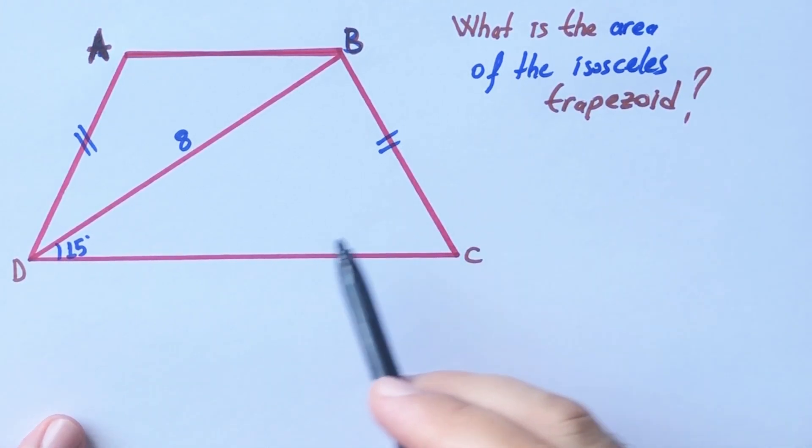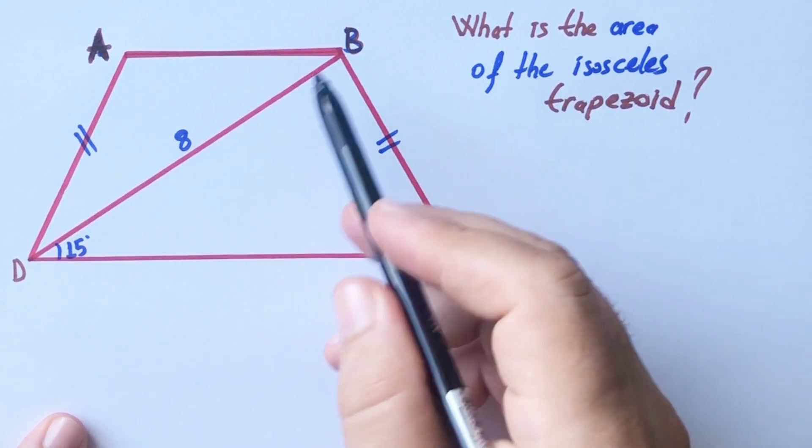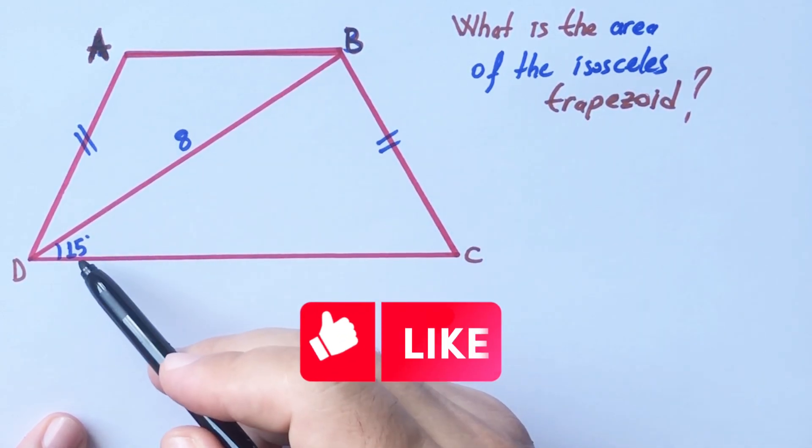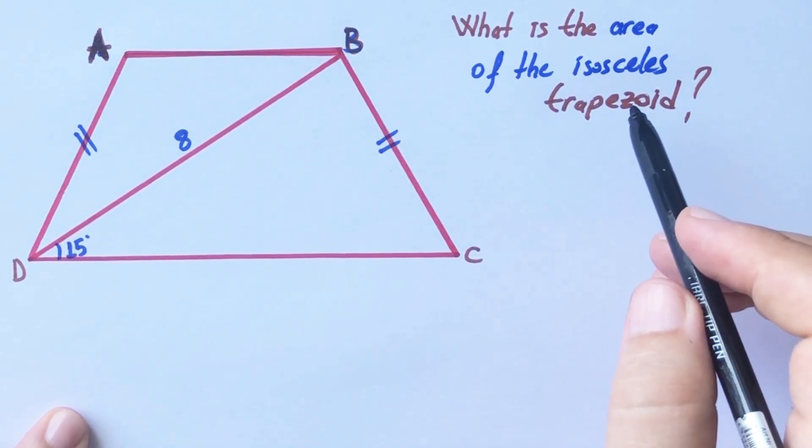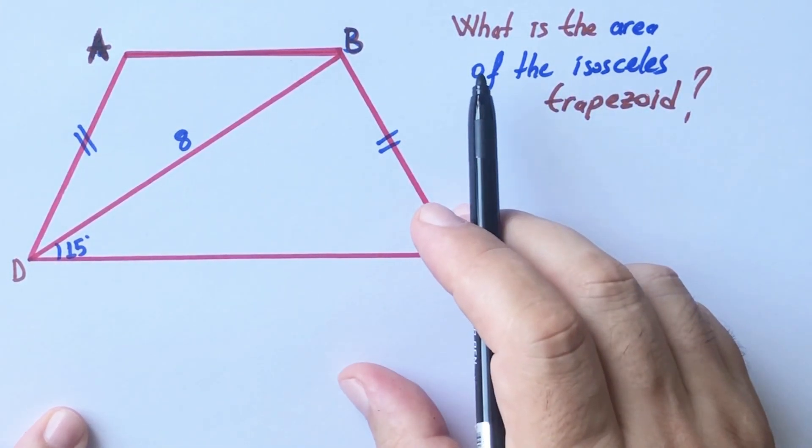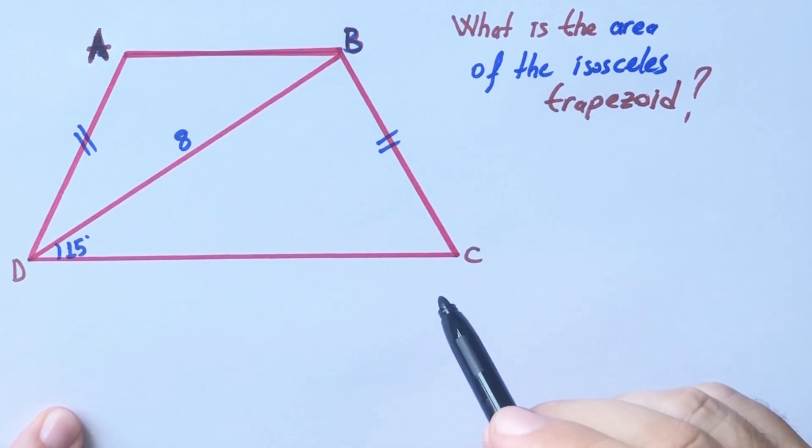Hello everyone, in this video we have one isosceles trapezoid. The length of DB is 8 units, and this angle is 15 degrees. We will calculate the area of this isosceles trapezoid.